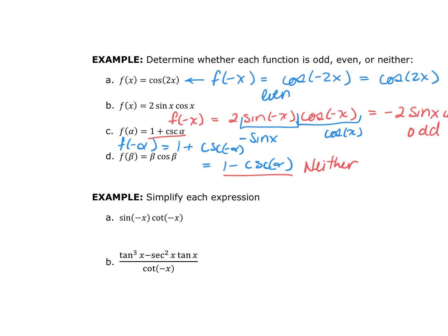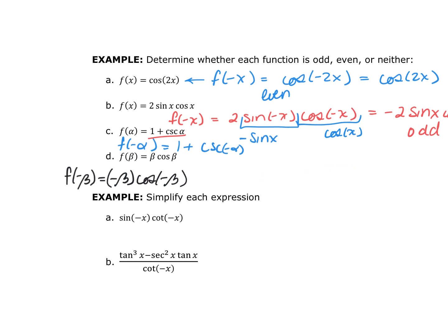For f(β) = β·cos(β): f(−β) = (−β)·cos(−β) = (−β)·cos(β) = −β·cos(β) = −f(β). So the exact opposite came out when I substituted a negative value, meaning this function is odd.